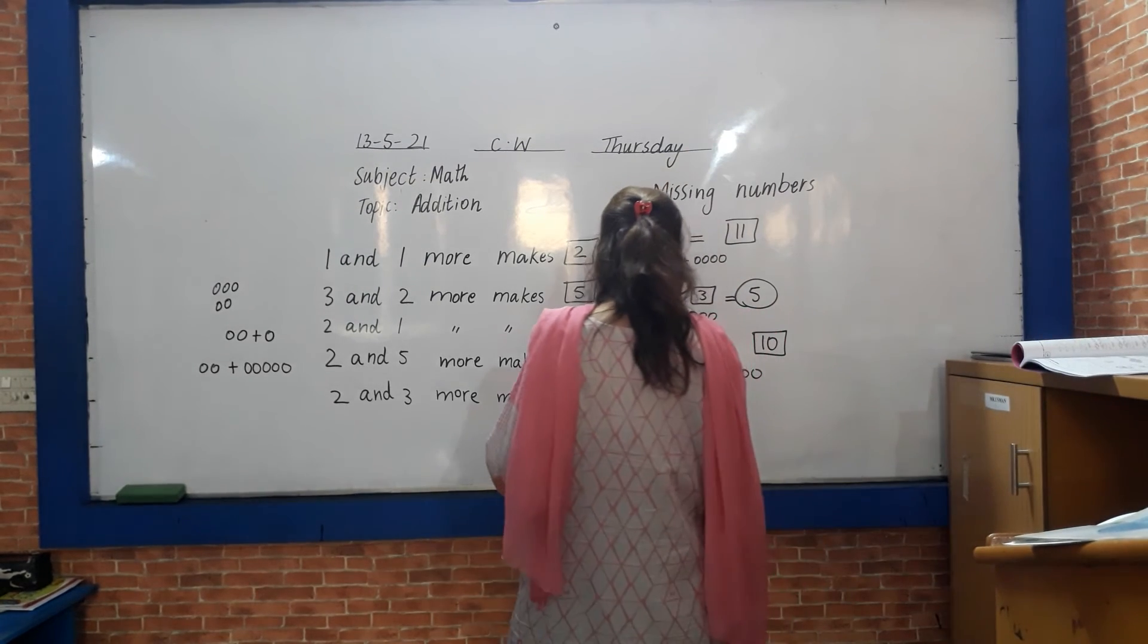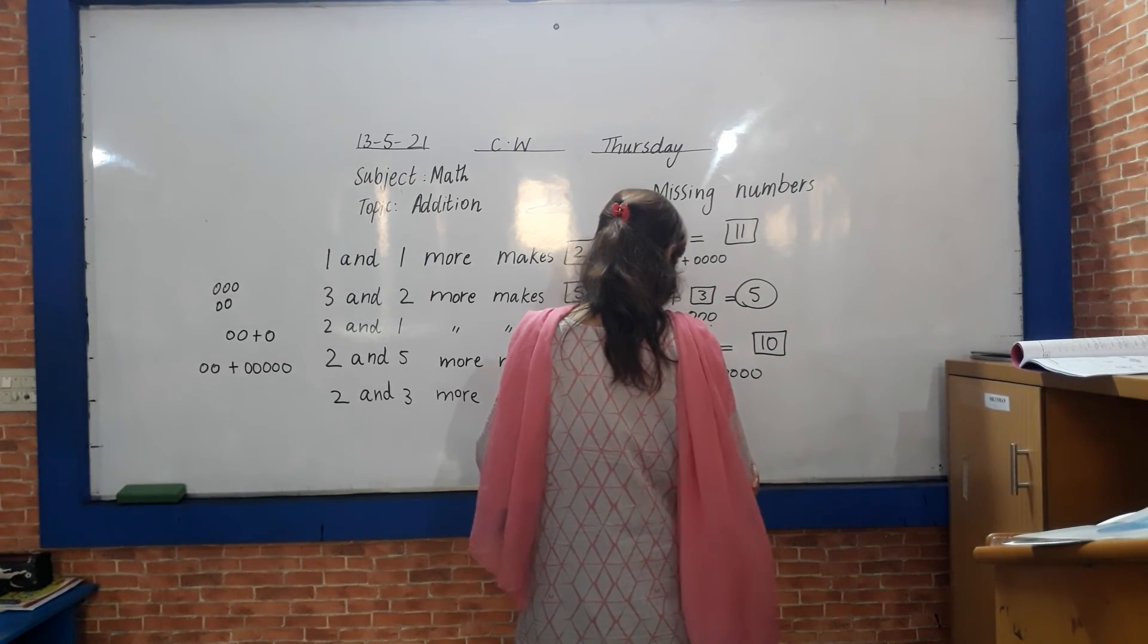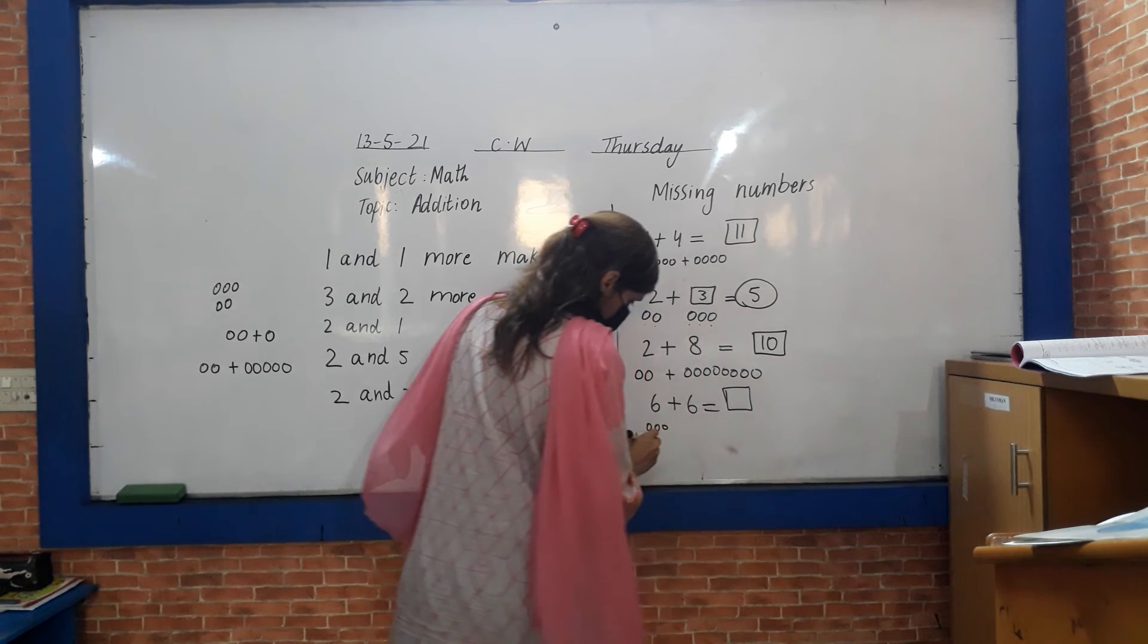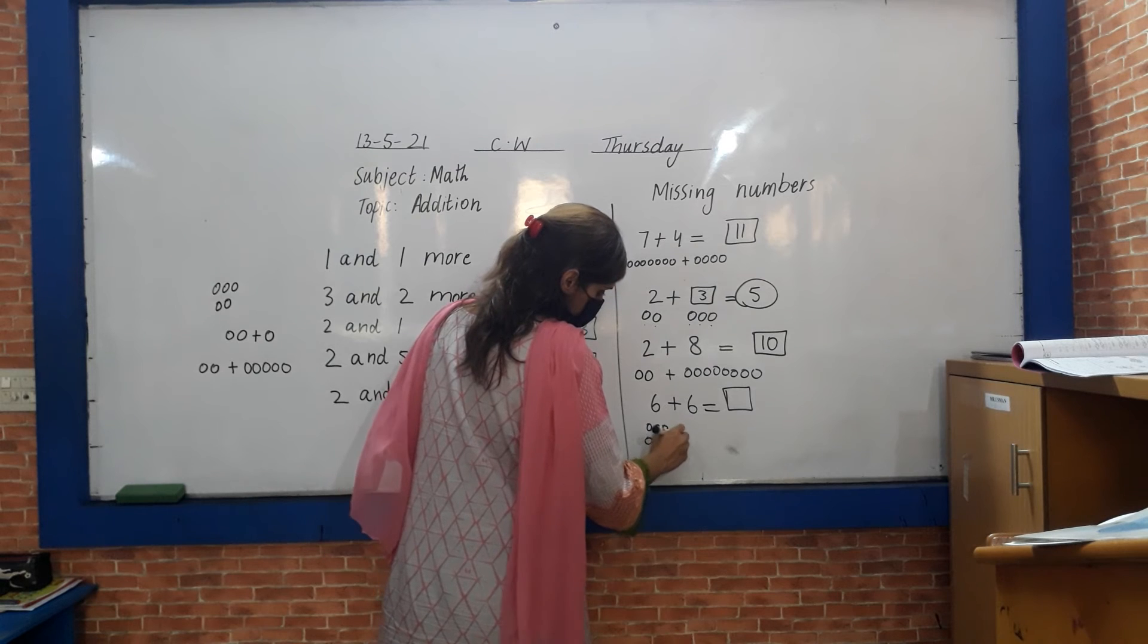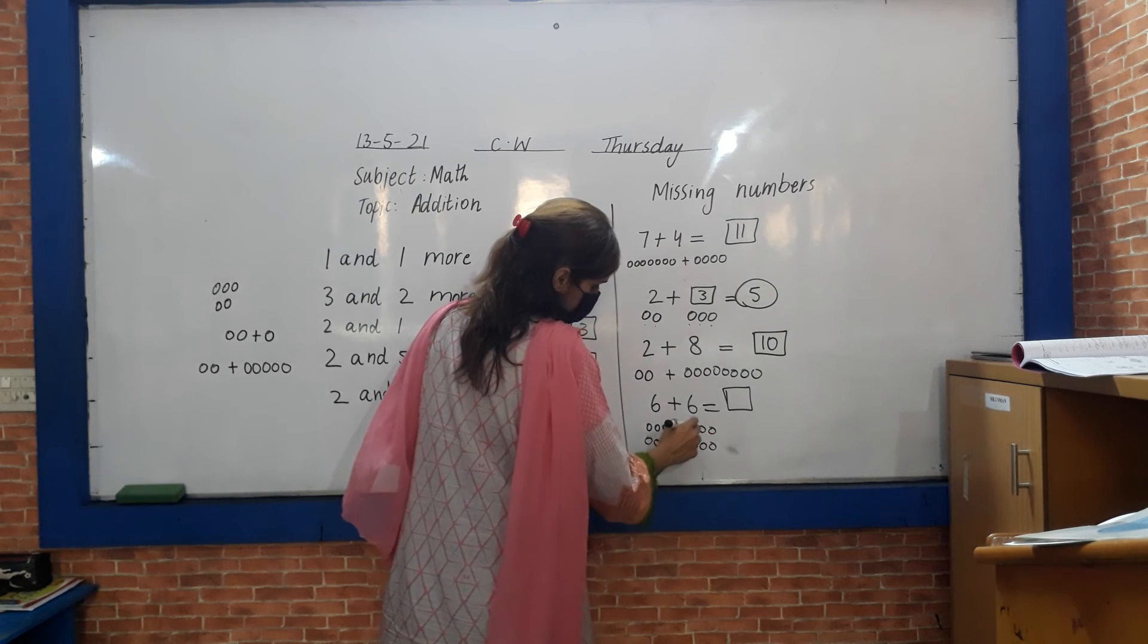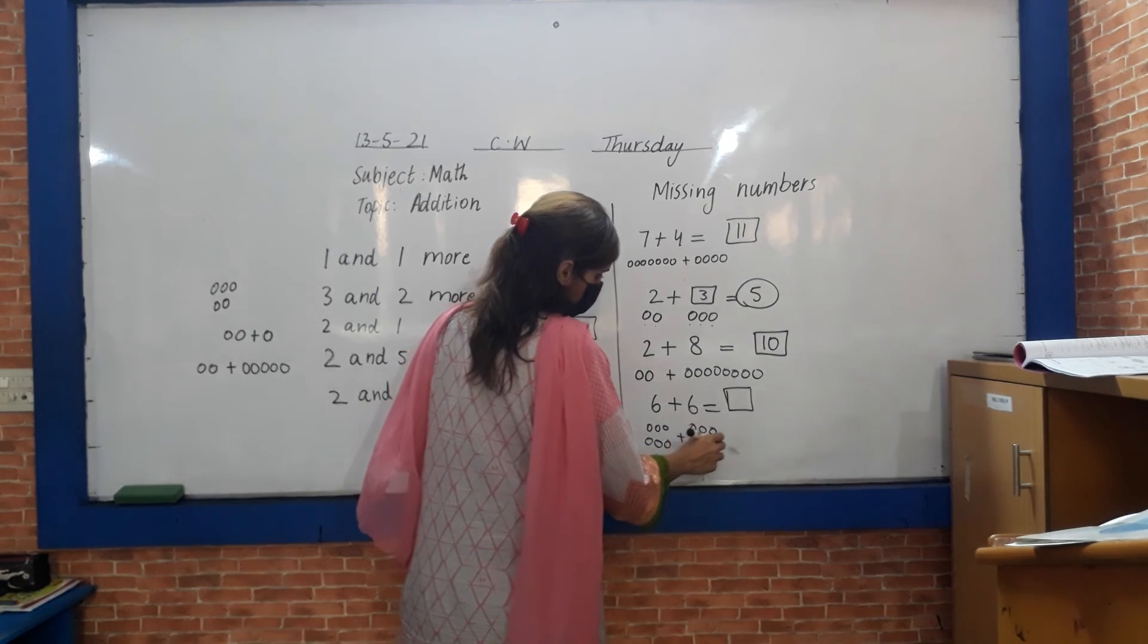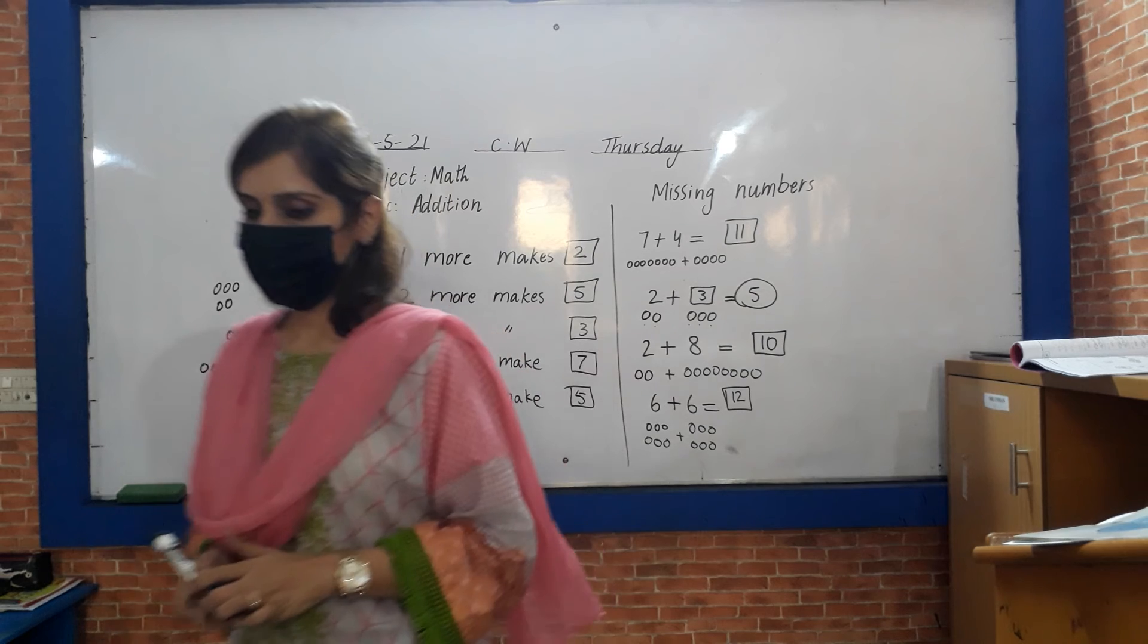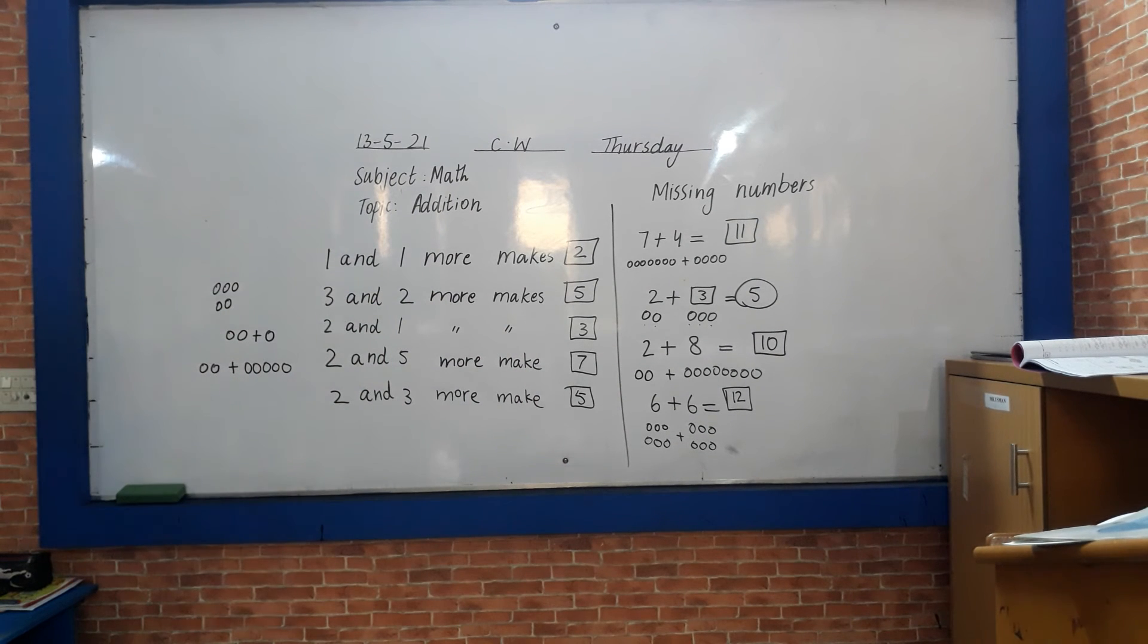Six plus six. What is the answer? One, two, three, four, five, six. Plus one, two, three, four, five, six. Six, seven, eight, nine, ten, eleven, twelve. Answer is twelve.